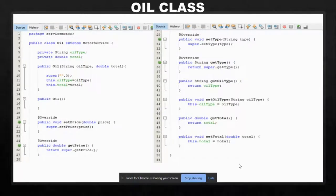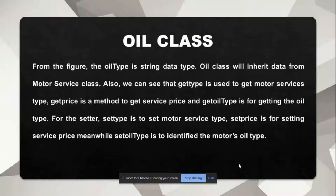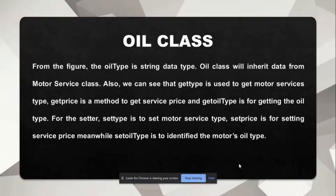The next one is the oil class coding. From the figure, the oil type is a string data type. The oil class will inherit data from the motor service class. Get type is used to get the motor service type. Get price is a method to get the service price, and get oil type is for getting the oil type. For the setter, set type is to set the motor service type, set price is for setting the service price, and set oil type is to identify the motor oil type.